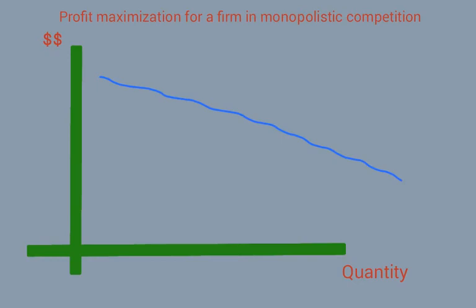In Unit 7, the other extreme monopoly, we saw a very steep demand curve. Here we see a demand curve that is in between, really, because the industry monopolistic competition is in between pure competition and monopoly.